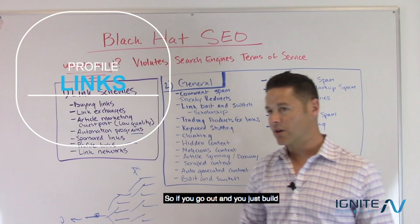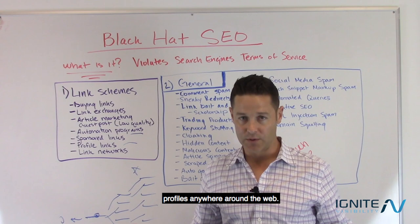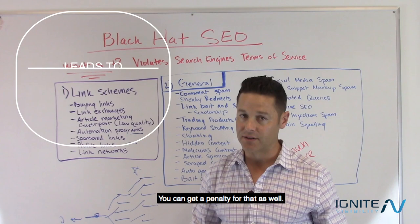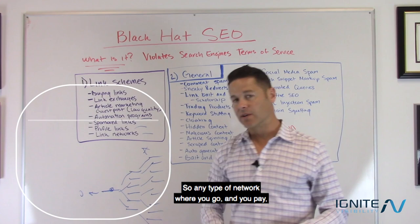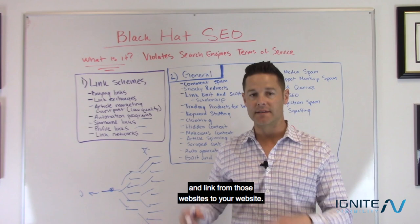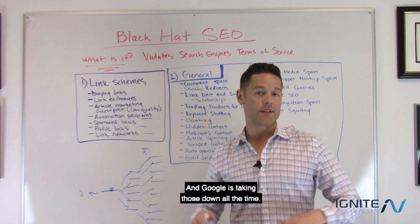Profile links: if you go out and build a whole bunch of social media profiles or profiles on forum sites around the web and put links in those to pages you're trying to rank higher, you can get a penalty for that — that's Black Hat SEO. And then link networks: any type of network where you pay and they put your links on a whole bunch of other websites is also Black Hat SEO, and Google is taking those down all the time.